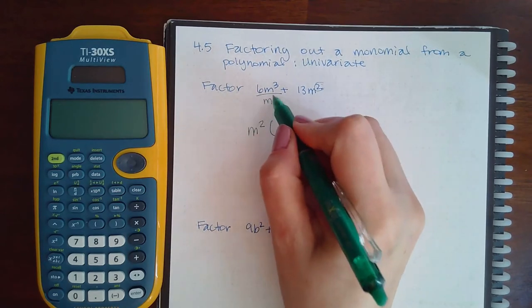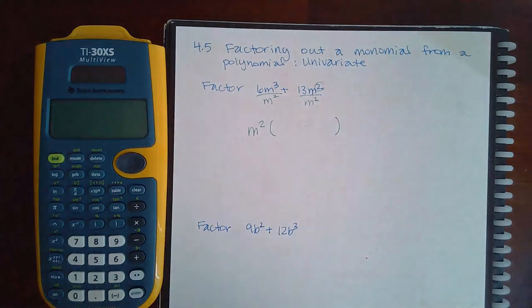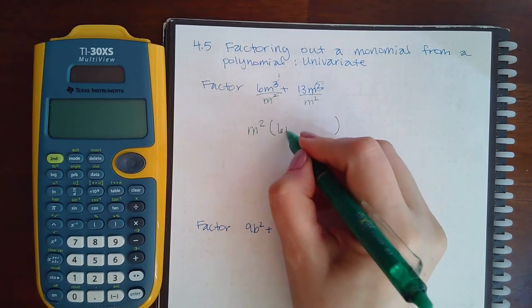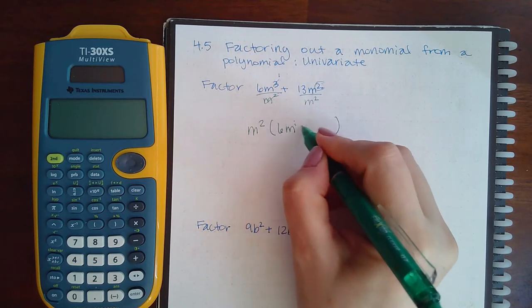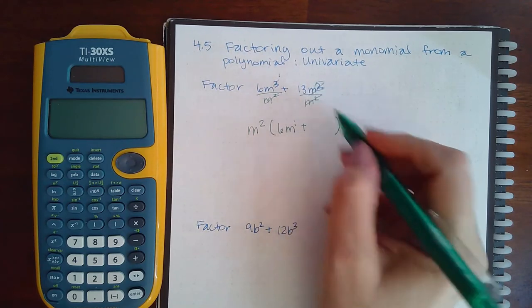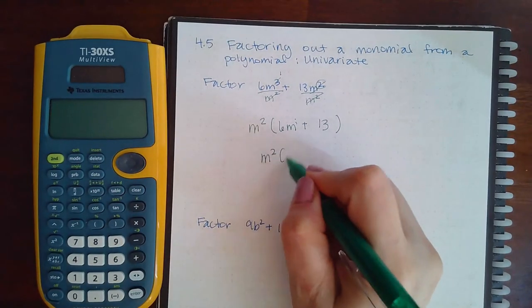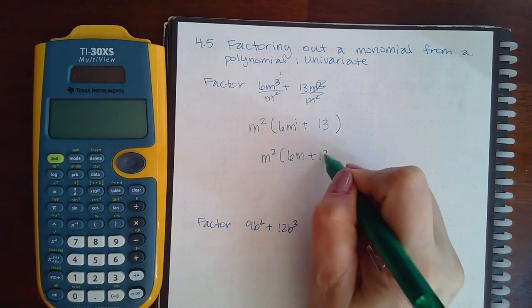So those will cancel leaving me with one so I'll have six just one of them and then these will both cancel leaving me with just 13. So the answer is m squared times 6m plus 13.